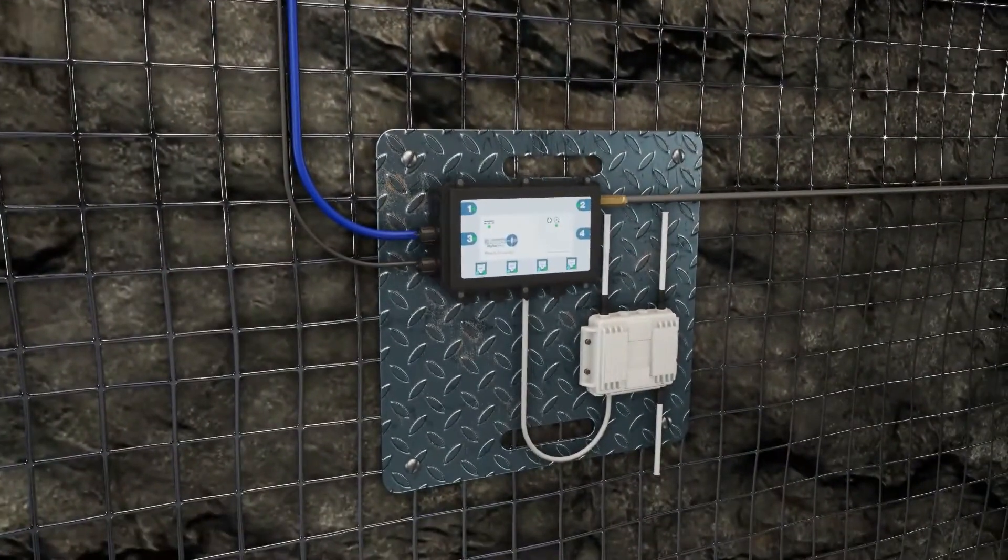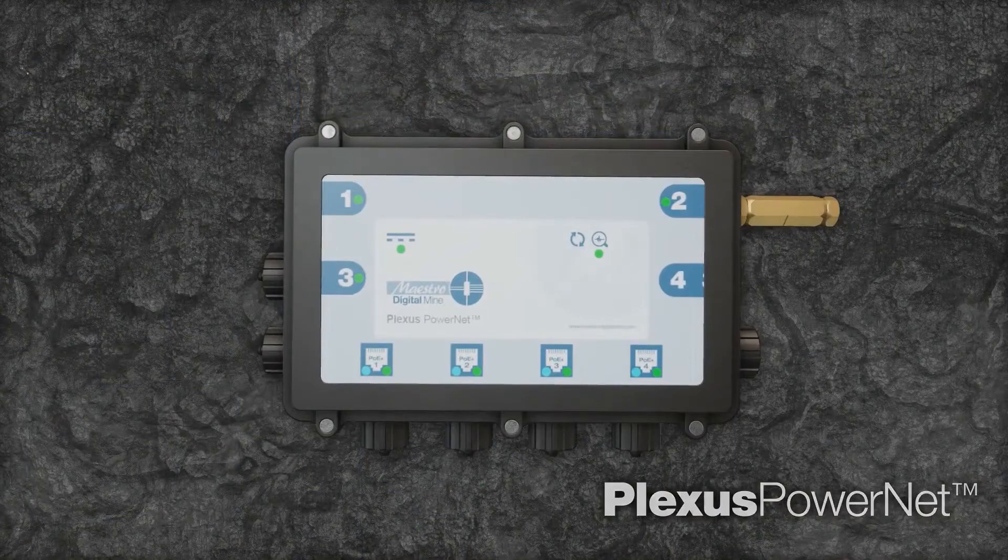The Plexus PowerNet is a last-mile communication backbone, extending your fiber network to the working phase.